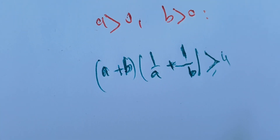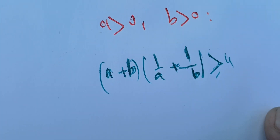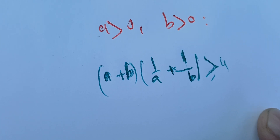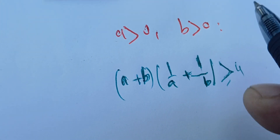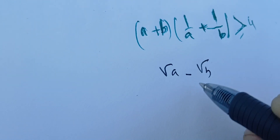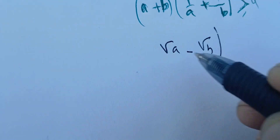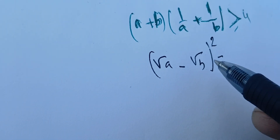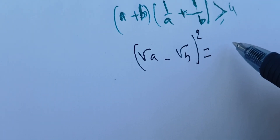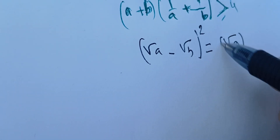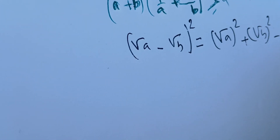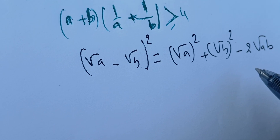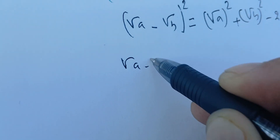We can just multiply and get to something, but we're going to start from something that we know. Here a is positive, b is positive, so we can define the square root of a and the square root of b. We're going to take their difference, square it, and using the known identity we get: square root of a minus square root of b, all squared, equals a plus b minus two times square root of a times b.